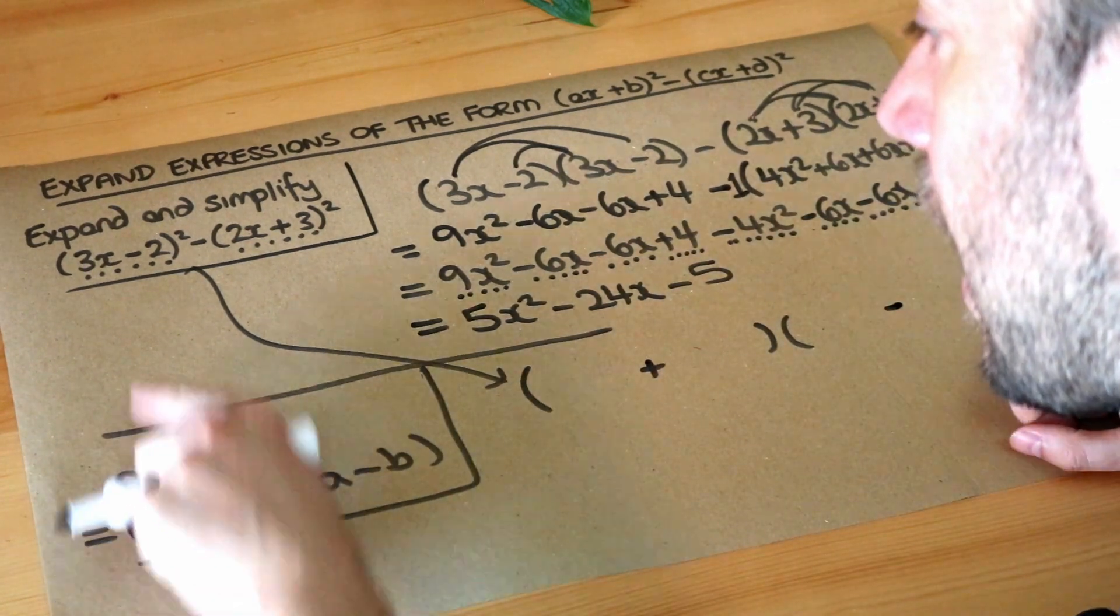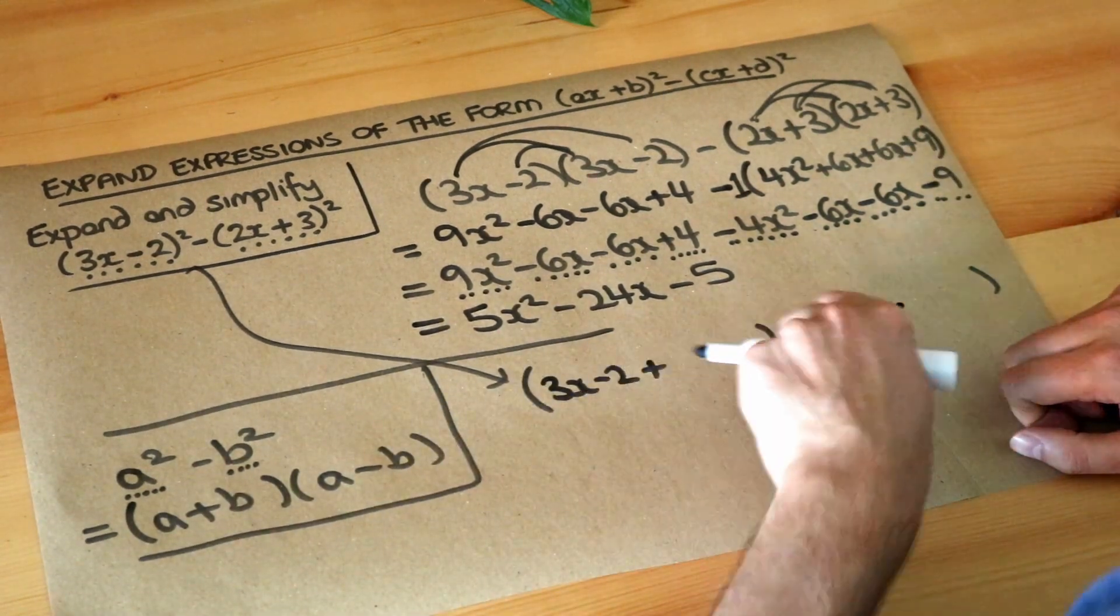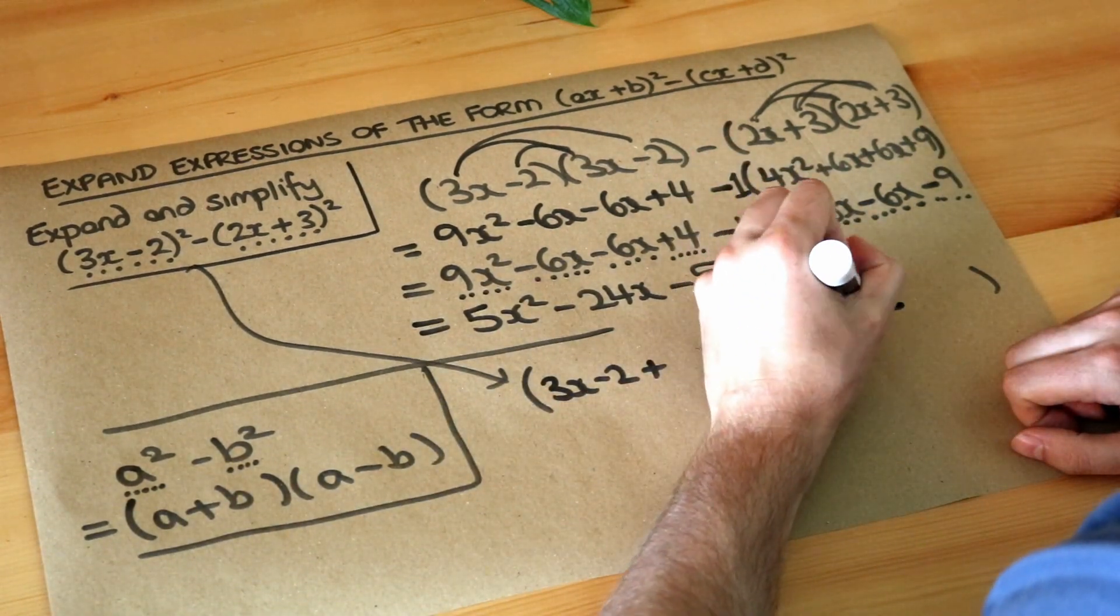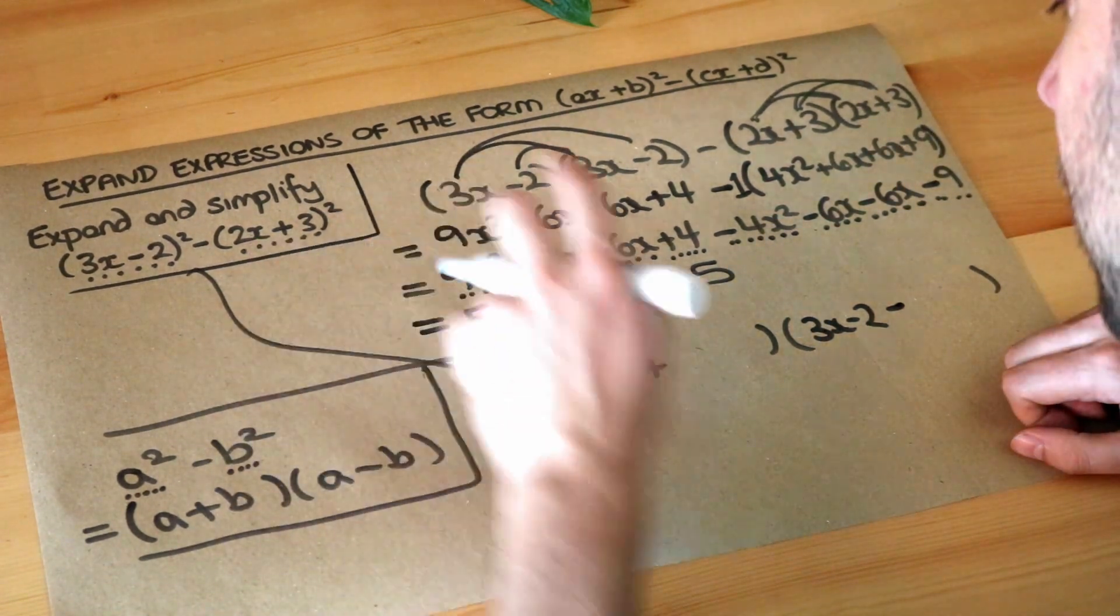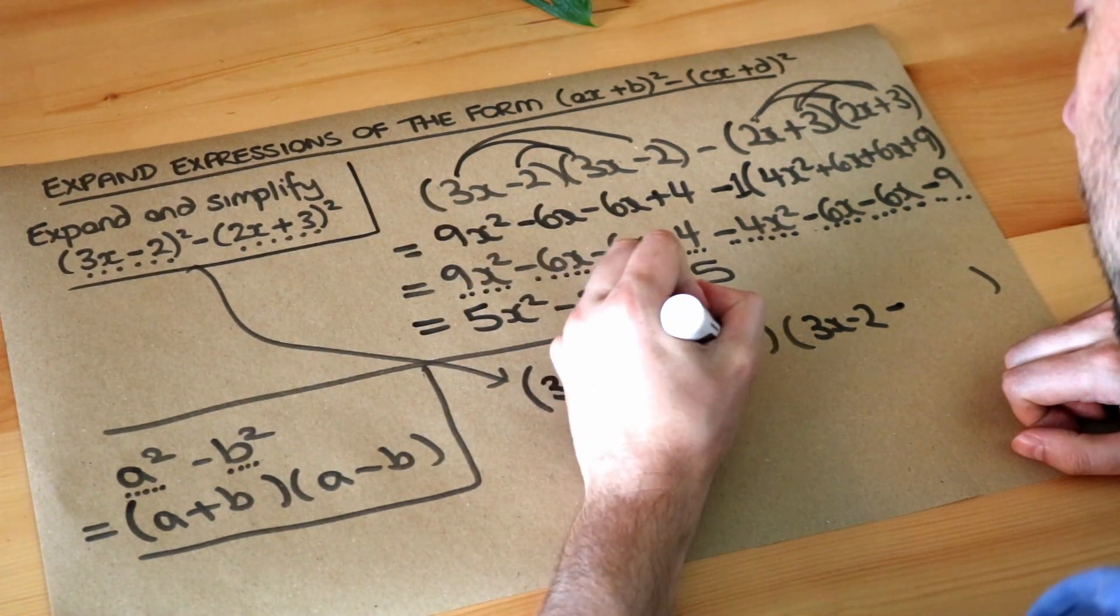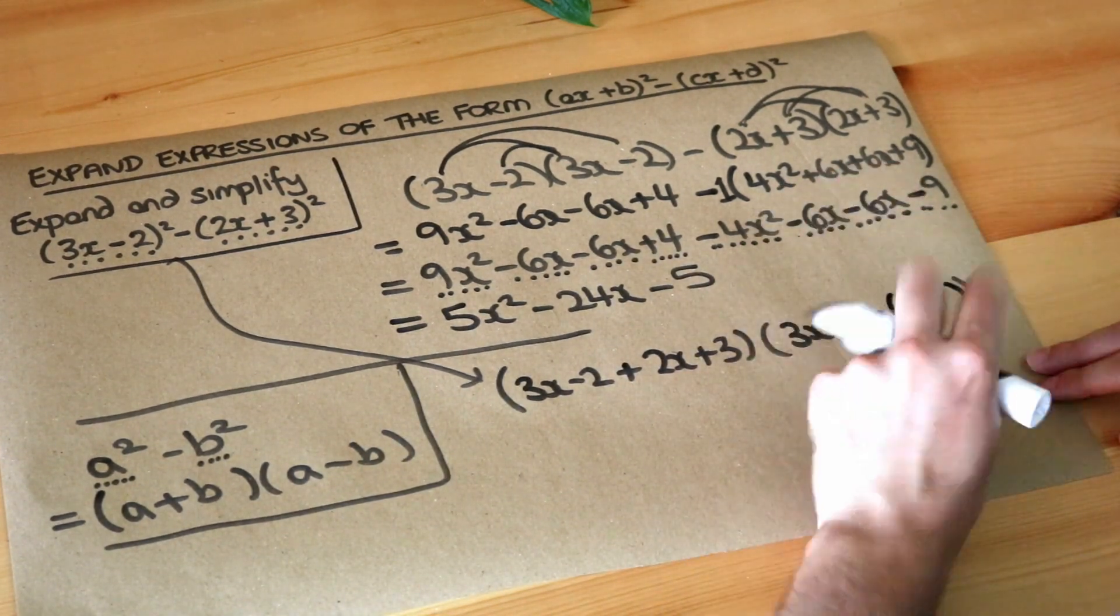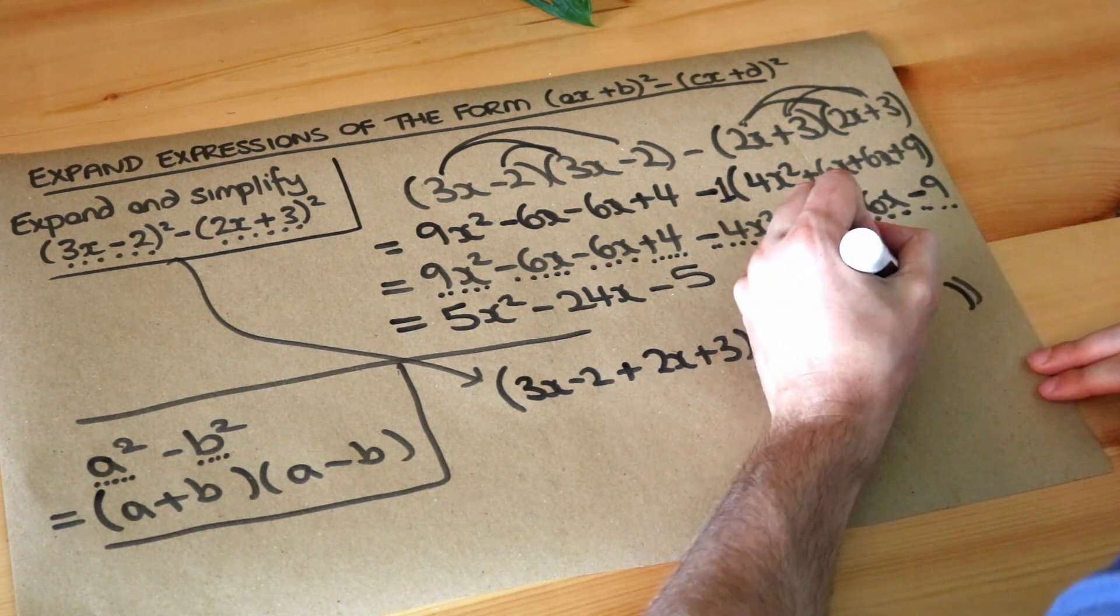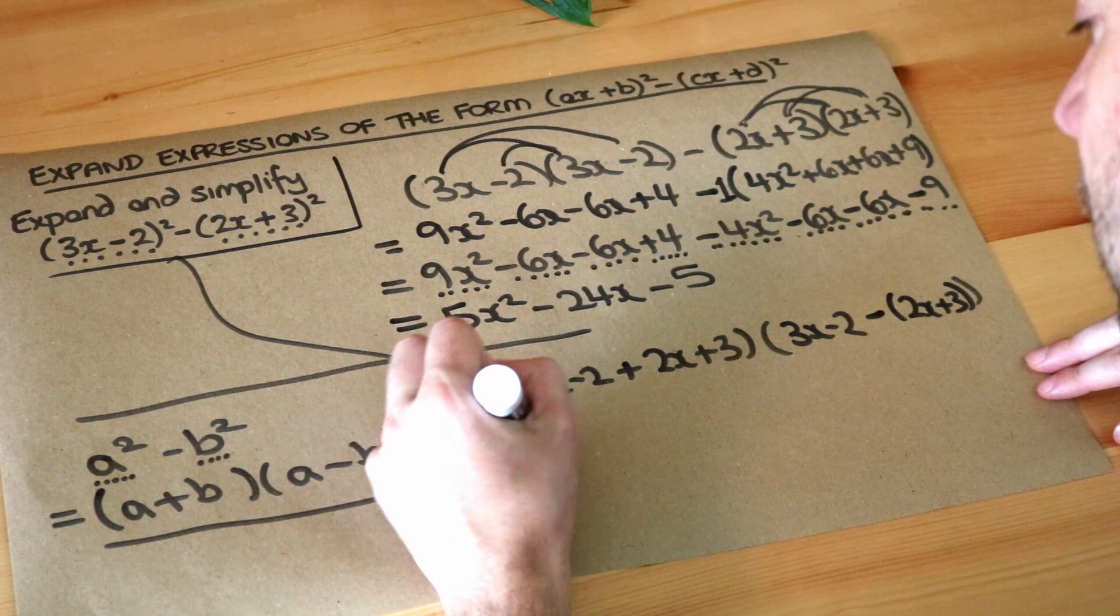And then look, our a is the (3x-2). So I'm going to put the (3x-2), a, a, (3x-2), (3x-2). And then the b, this b here is (2x+3). So we've got the (2x+3). Now as I said, whenever we subtract a whole expression it needs to go in brackets. So we're subtracting all of (2x+3).